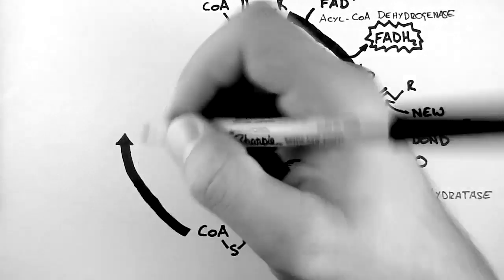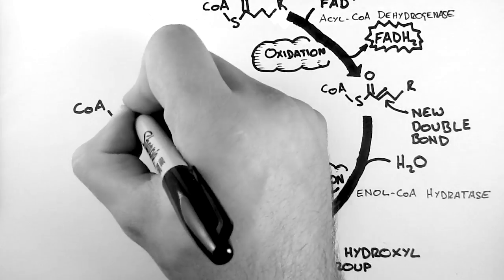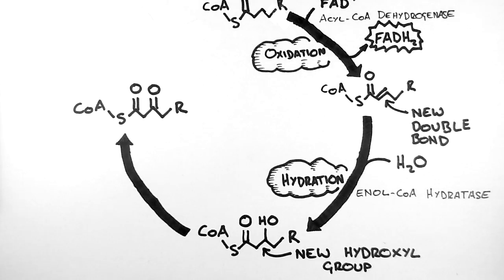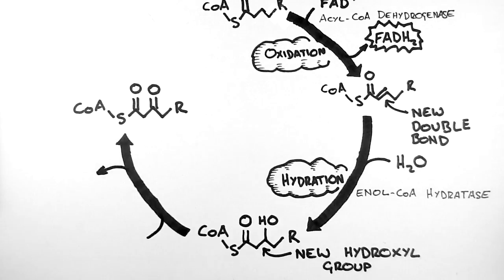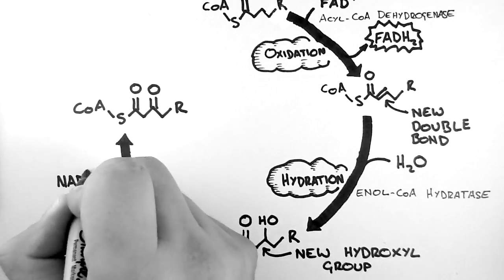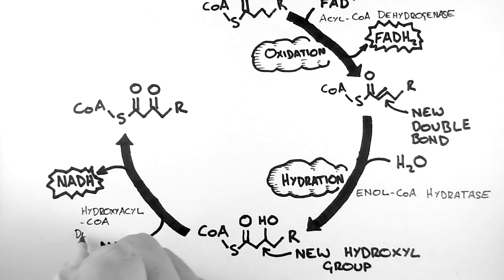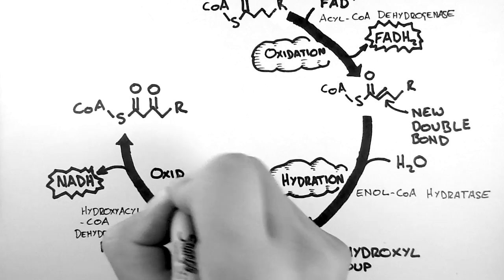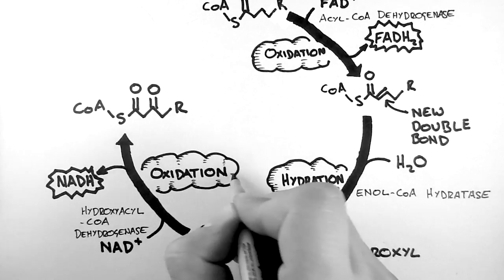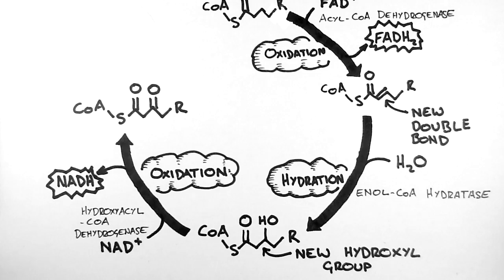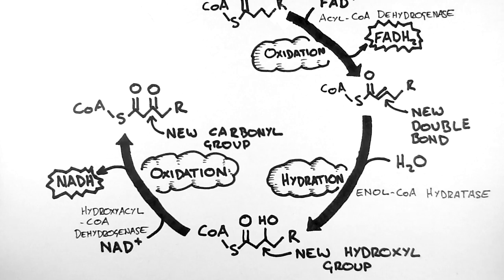The third step in beta-oxidation is the dehydrogenation of this new hydroxyl group. To do this, the oxidising agent NAD+ is reduced to the high energy NADH, which will also be used in the electron transport chain. The enzyme here is beta-hydroxyacyl-CoA dehydrogenase, and the overall process is another oxidation reaction. Note that we now have a new carbonyl group on our beta carbon.